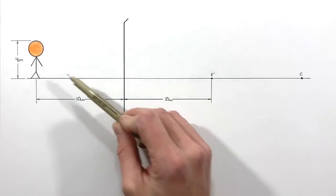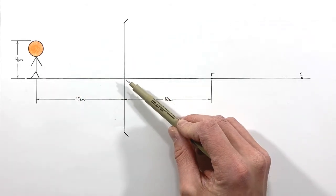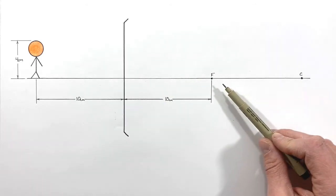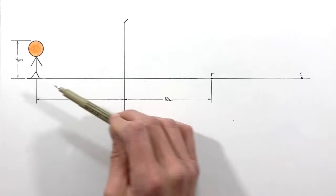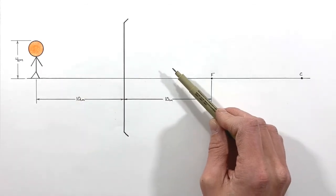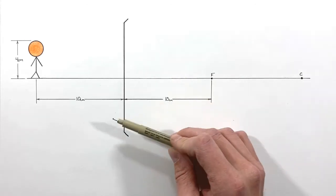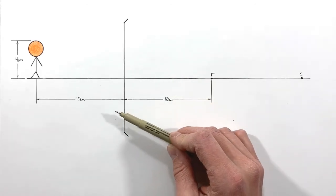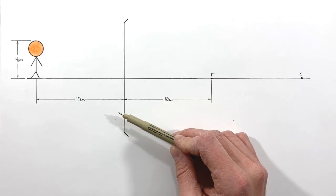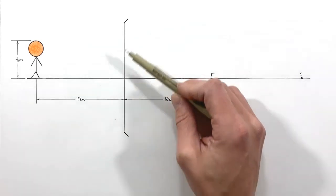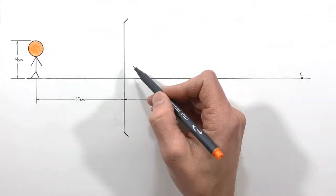Today we're going to look at a four centimeter tall object placed 10 centimeters in front of a convex mirror which has a focal length of 10 centimeters. In this problem we're going to draw a ray tracing diagram to determine where the image will appear, use the mirror equation to calculate the image position, the magnification equation to determine the overall magnification, and the height of the image.